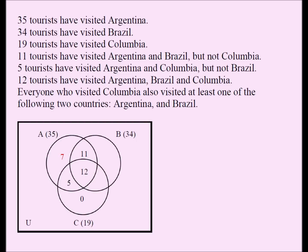Next, let's find the Brazil-and-Colombia-but-not-Argentina region. 19 visited Colombia, and we know three of Colombia's regions: 5, 12, and 0. So 19 minus (5 plus 12 plus 0) equals 19 minus 17, which equals 2. So 2 goes in the Brazil-and-Colombia-but-not-Argentina region.